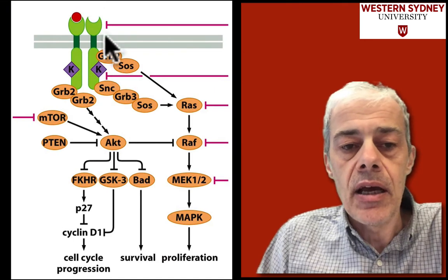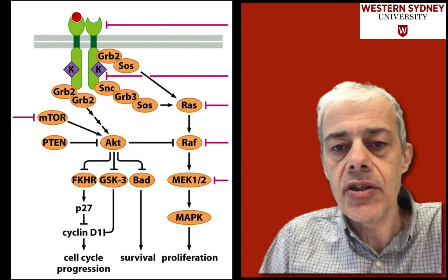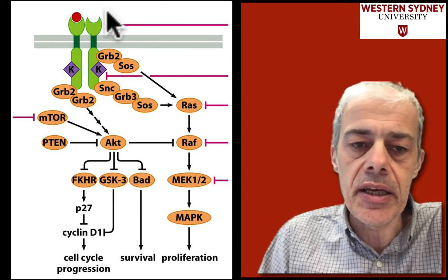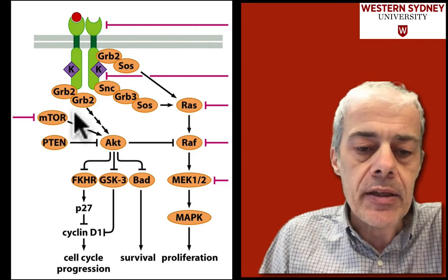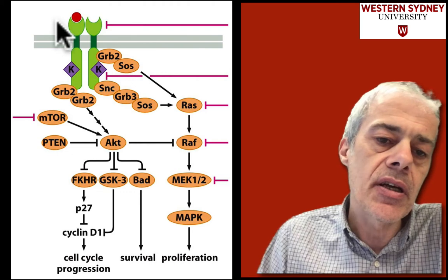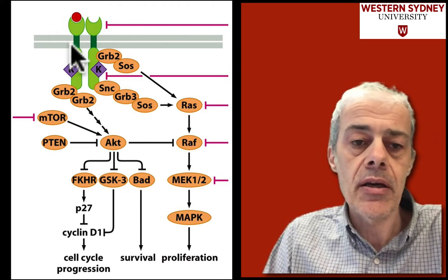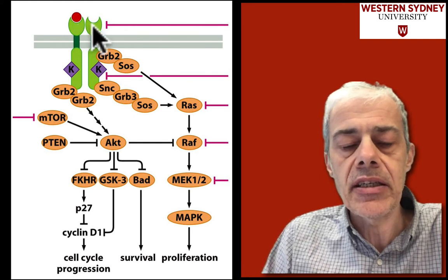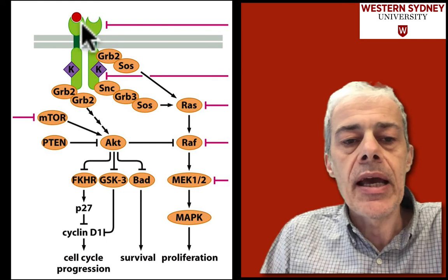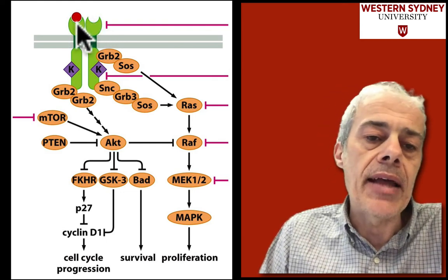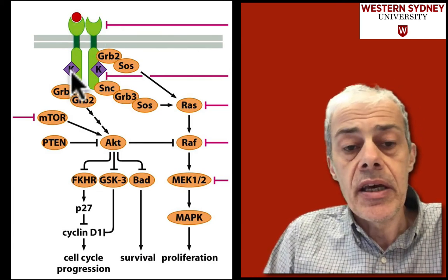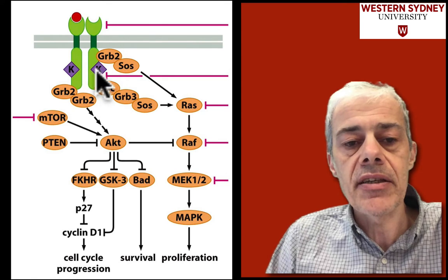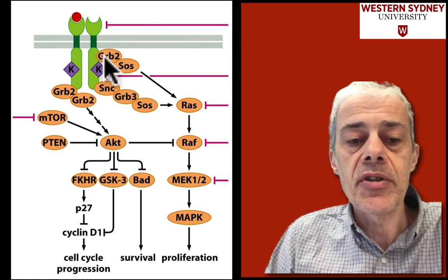Looking at a signaling pathway, the drugs used to target signaling molecules are shown here in pink/purple. The two green parts are the two monomers involved in making a tyrosine kinase receptor, such as EGF receptor. A signaling molecule is picked up by the tyrosine kinases; the intrinsic kinase activity on the cytoplasmic tails phosphorylates the chains and allows binding of other proteins such as GRB2, which contains an SH2 domain that recognizes a phosphorylated tyrosine.